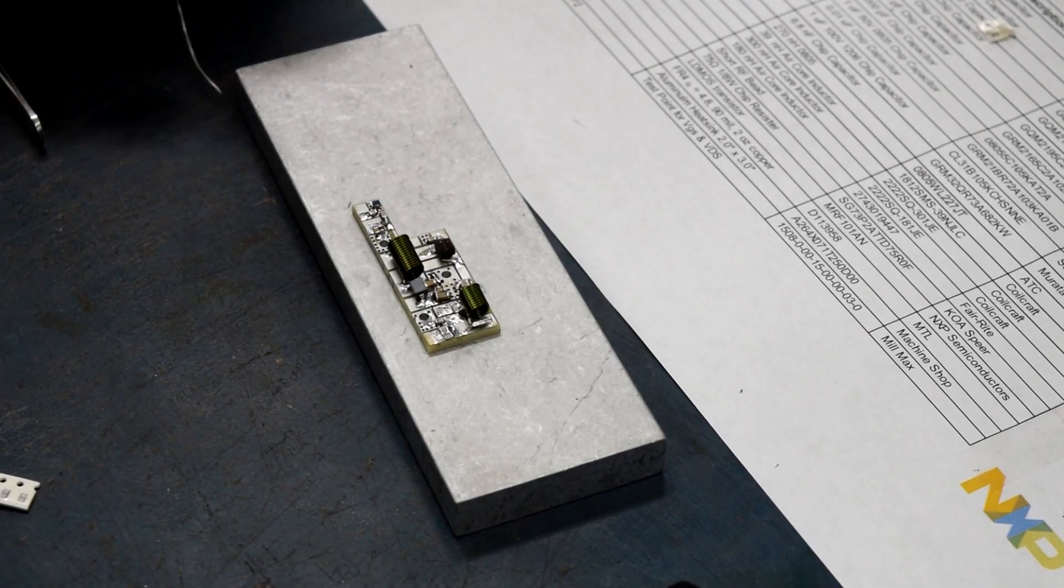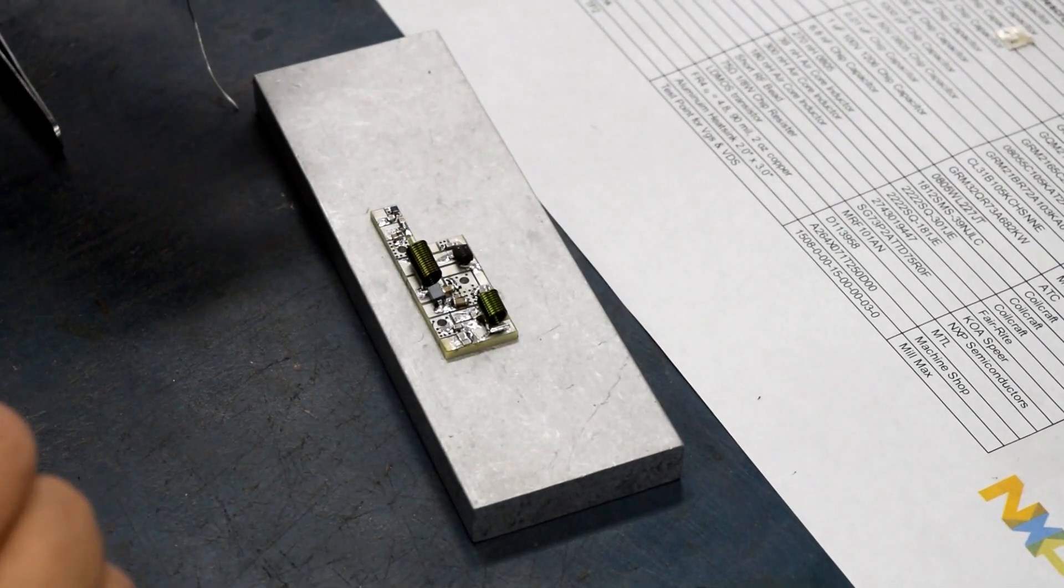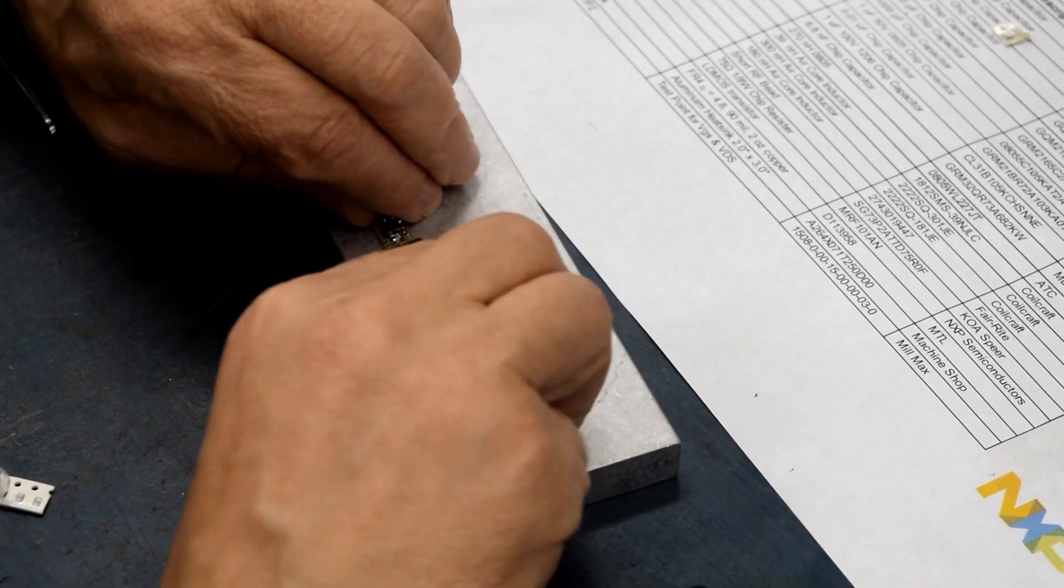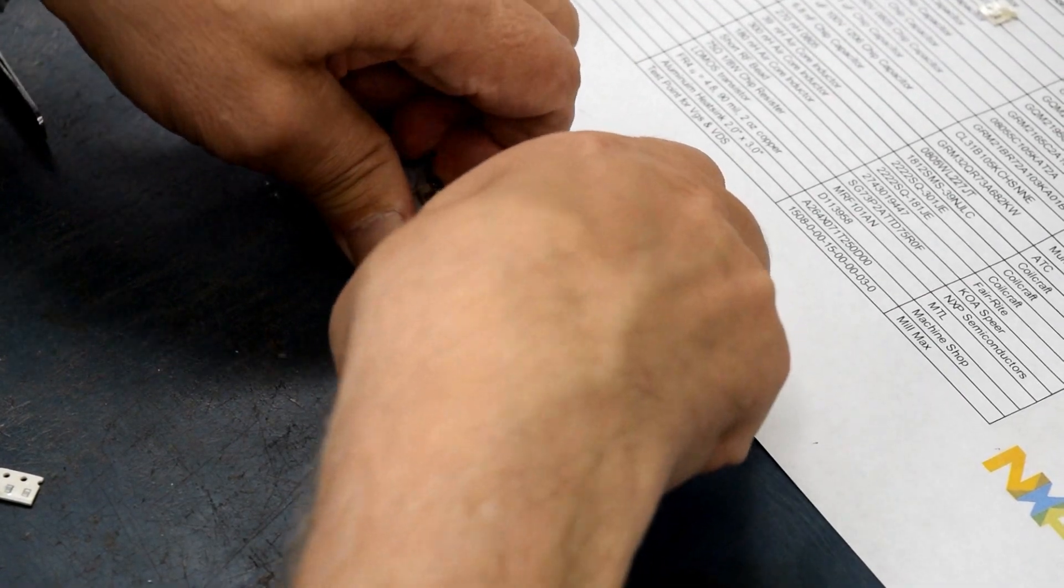So after the surface mount parts are all mounted on the board, double check that there are no solder bridges, shorts, and all of the joints are good quality. Then it's time to remove the board from your assembly jig.